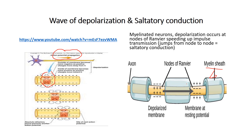If we're talking about unmyelinated neurons, which are often found in the central nervous system as interneurons, it's a slower transmission because they don't have myelin. That impulse has to be conducted down the entire length of that neuron — it doesn't have the benefit of jumping from node to node like myelinated neurons do.